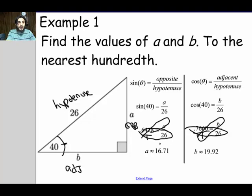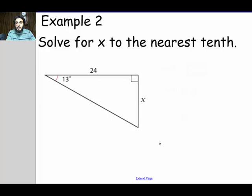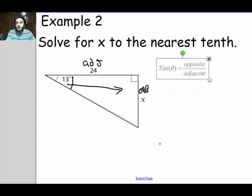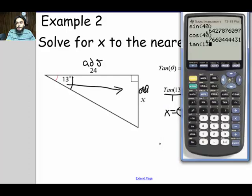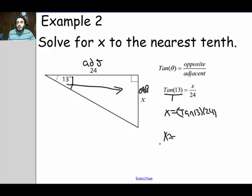Let's move on to another example. Example two. Solve for x to the nearest tenth. So 13 will be our reference angle. That means this is our opposite side because it's across. And that means this is our adjacent side. So we will use the tan ratio. The tan of theta is equal to opposite over the adjacent. So we're going to use the tan of 13 is equal to x over 24. And then we can cross multiply. You can just say x equals the tan of 13 times 24 and put that in a calculator. We get 5.5 to the nearest tenth. So x is approximately 5.5.